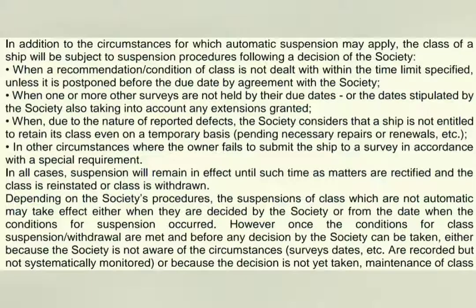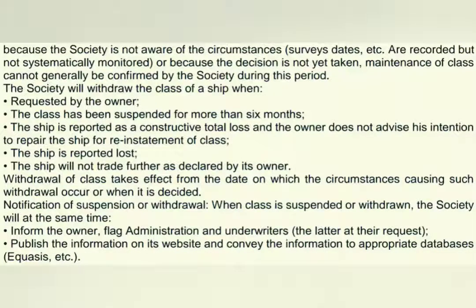However, once the conditions for class suspension or withdrawal are met and before any decision by the society can be taken — either because the society is not aware of the circumstances or because the decision is not yet taken — maintenance of class cannot generally be confirmed during this period. The society will withdraw the class of a ship when: requested by the owner; the class has been suspended for more than 6 months; the ship is reported as constructive total loss and the owner does not advise intention to repair for reinstatement of class; the ship is reported lost; or the ship will not trade further as declared by the owner. Withdrawal of class takes effect from the date on which the circumstances causing such withdrawal occur or when it is decided.